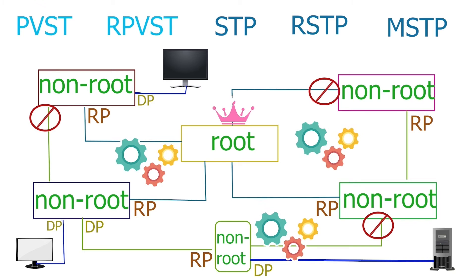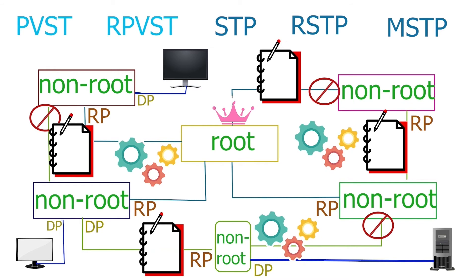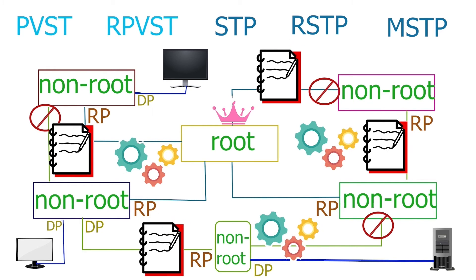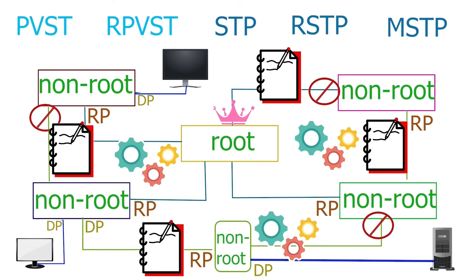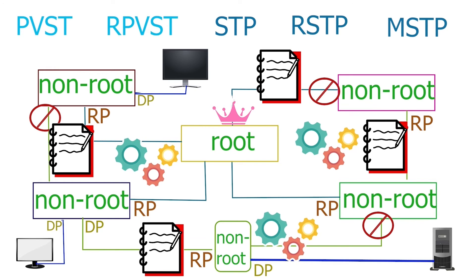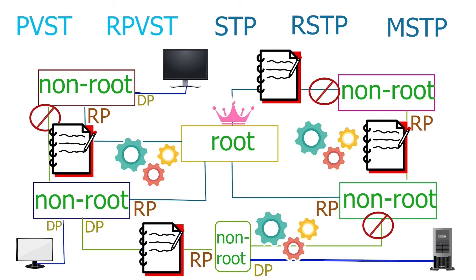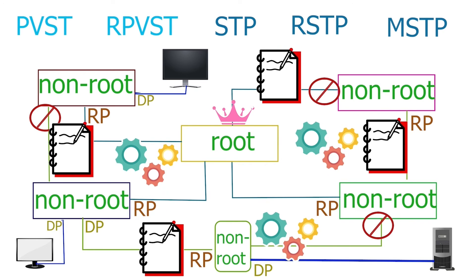They use the same rules and tiebreakers to select the designated port. After selecting root and designated ports, all variations block the remaining ports to remove loops. All variations run all ports through a few states. During these states, they learn the network topology, flush CAM table entries, select root and designated ports, and block the ports causing the loops. These are the similarities between these variations.